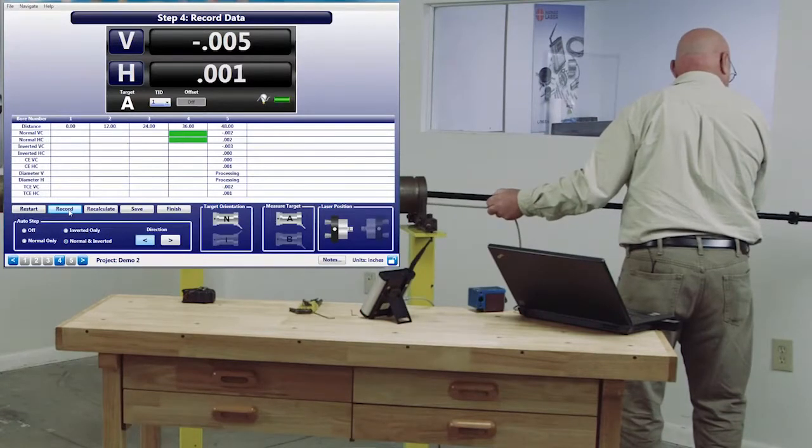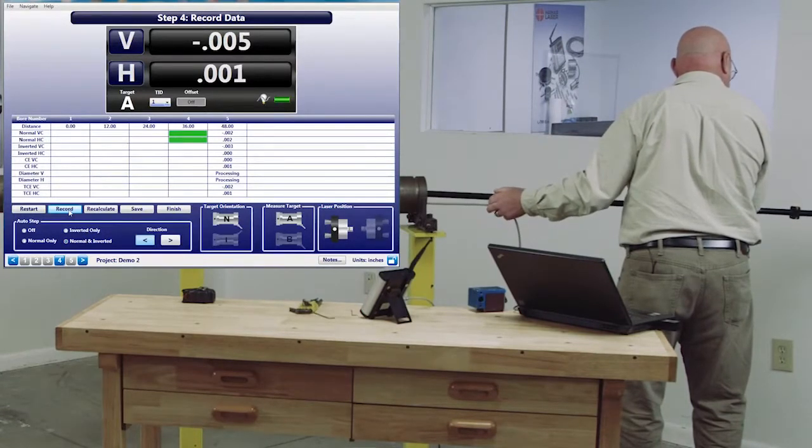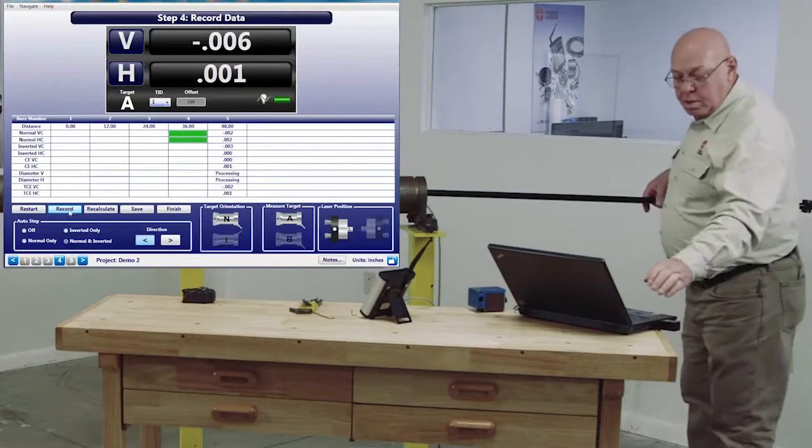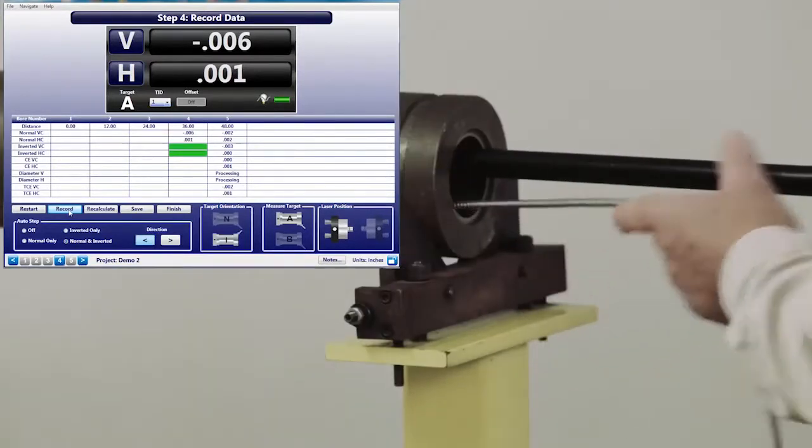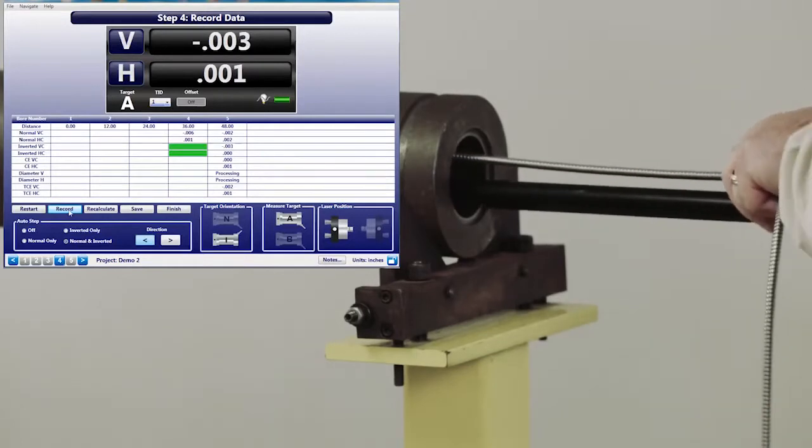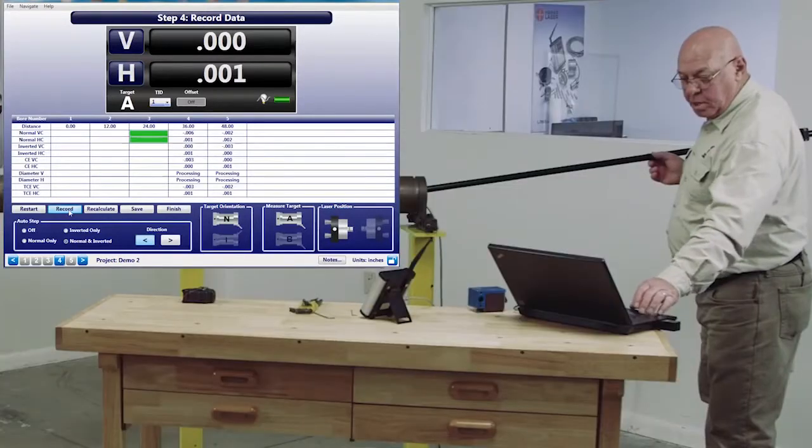Using the level, make sure I got the cable on the bottom. And I'm going to record that. Now I'm going to turn the target to the inverted position and record.